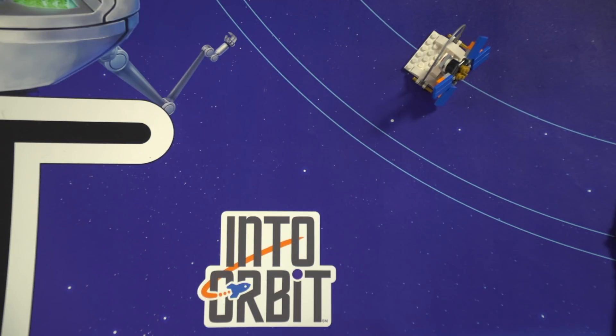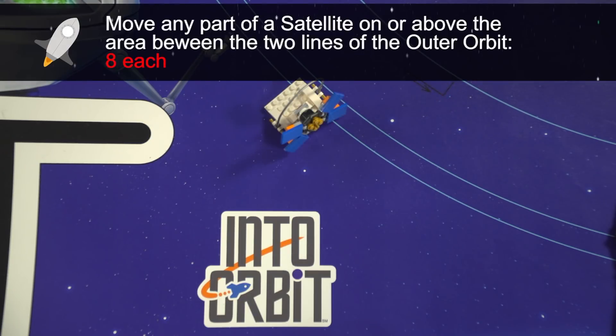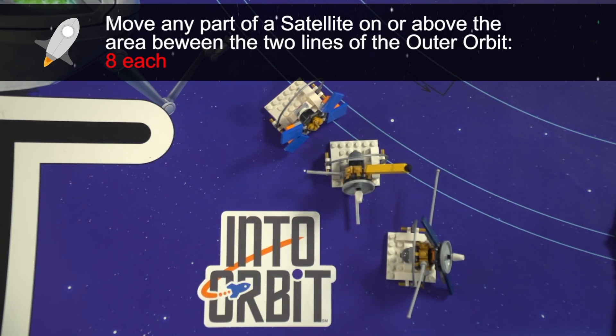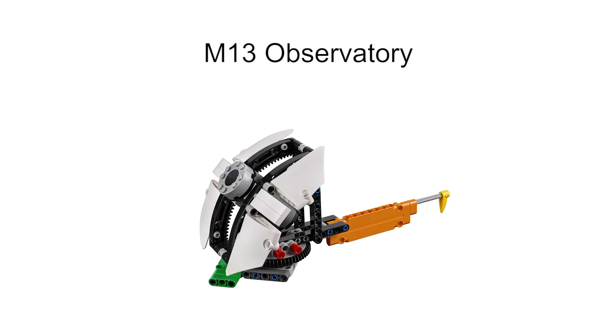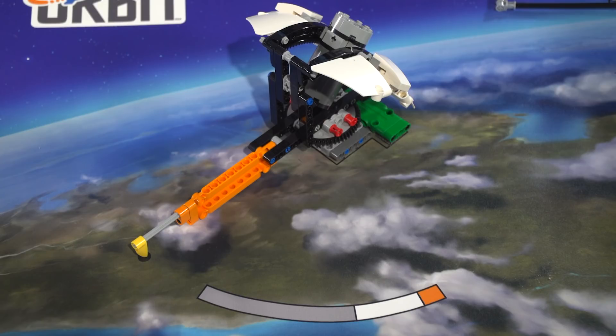The robot needs to move one or more satellites to the outer orbit. Rotate the observatory to a precise direction.